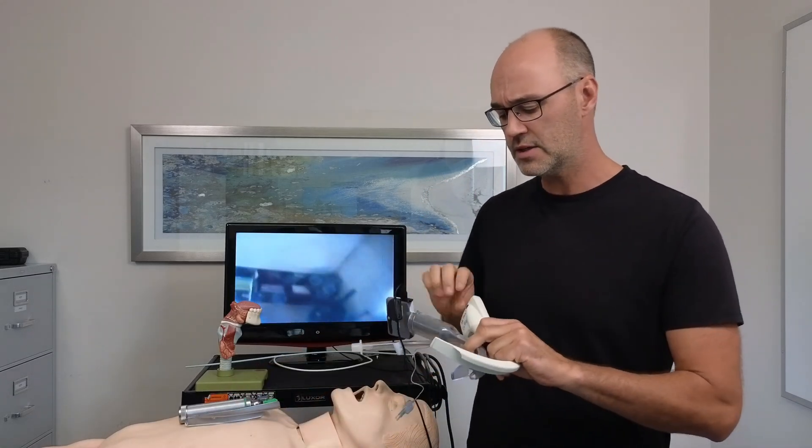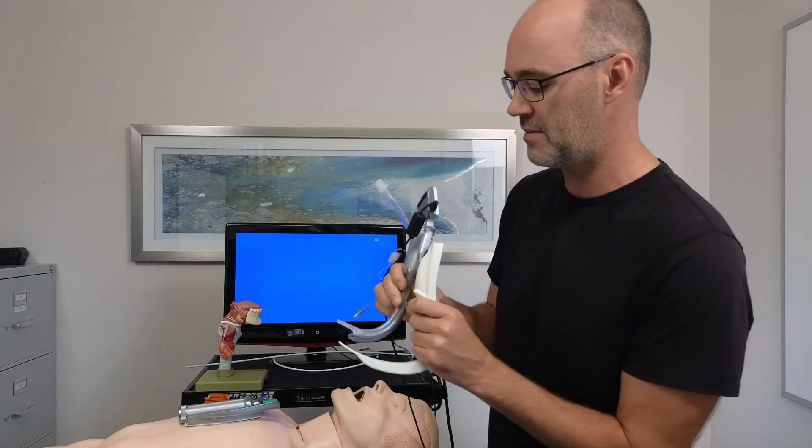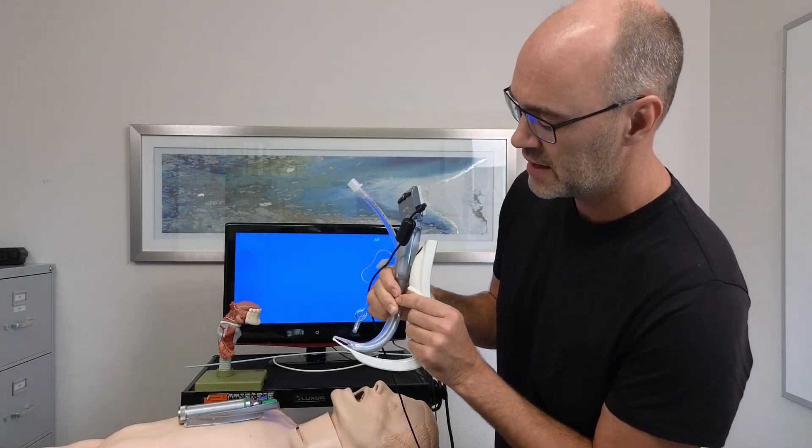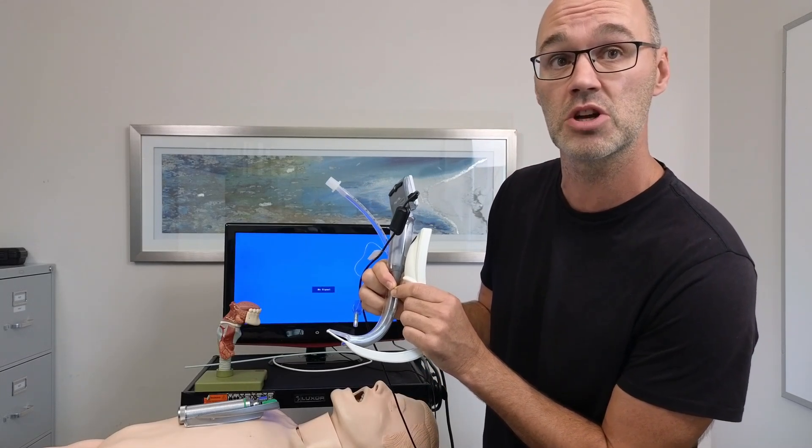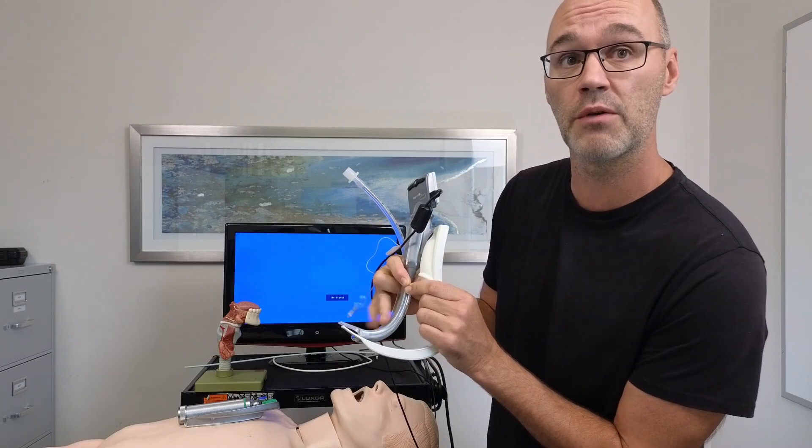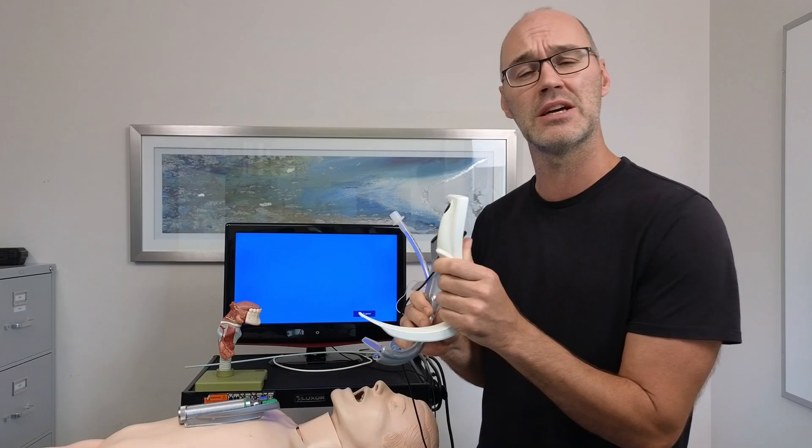Compared to the hyperangulated, if we compare these to hyperangulated, you can see how those, from the tip that goes in the patient's mouth, how those are very different laryngoscope blades. This is referred to as a hyperacute angle, and this would be referred to as a Macintosh style.